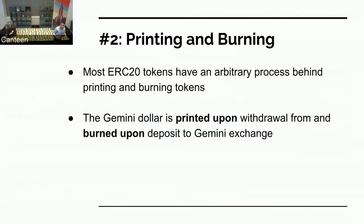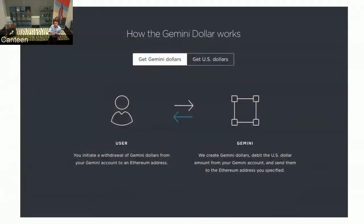Printing and burning: if you've participated in a token sale, those tokens have kind of an arbitrary means of printing and burning — they've got their own rules. With the Gemini dollar, it's defined when we print and burn. It's printed upon withdrawal from Gemini exchange and burned upon depositing that Gemini dollar back into Gemini exchange and redeeming fiat. When you go to Gemini.com and withdraw, they create a Gemini dollar for you — you provide an Ethereum address, we send you an ERC-20 token and debit your account a fiat dollar. When you want to redeem it, you deposit it back and the burn function is called.